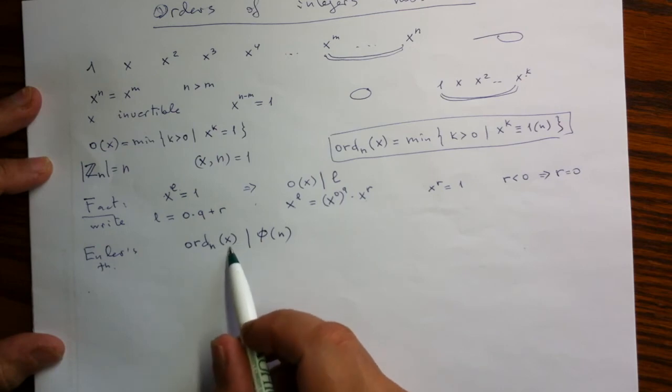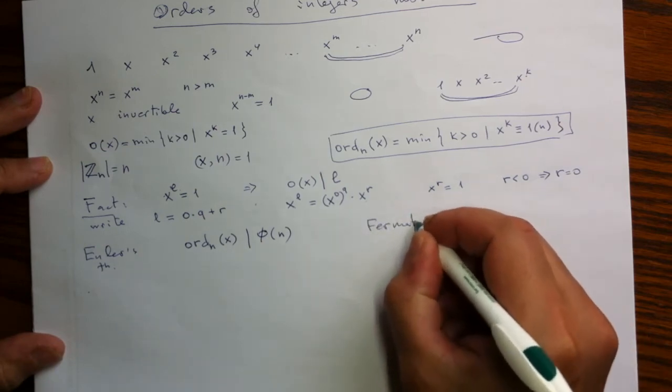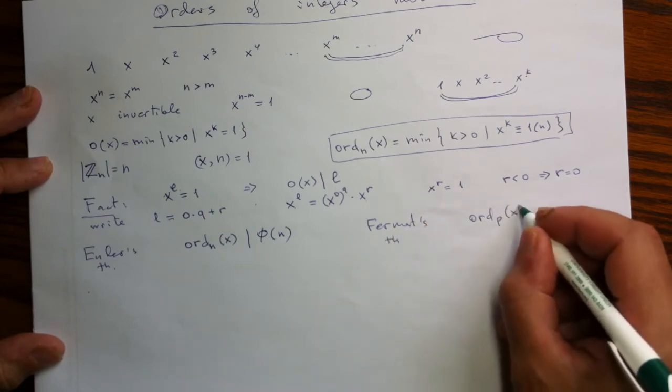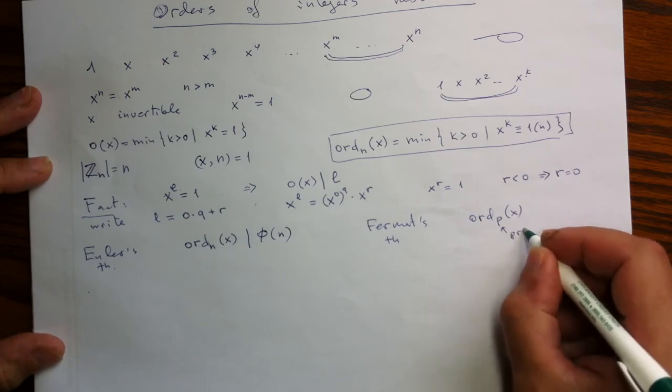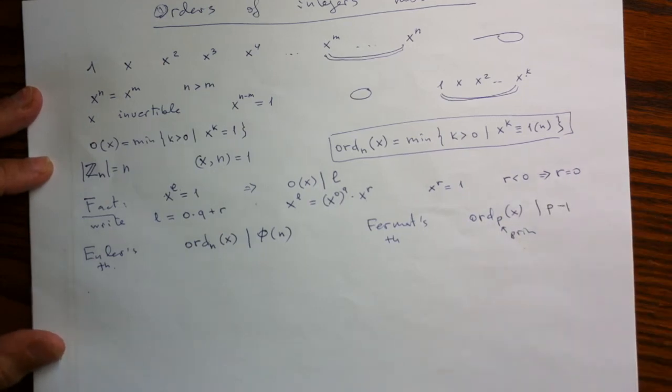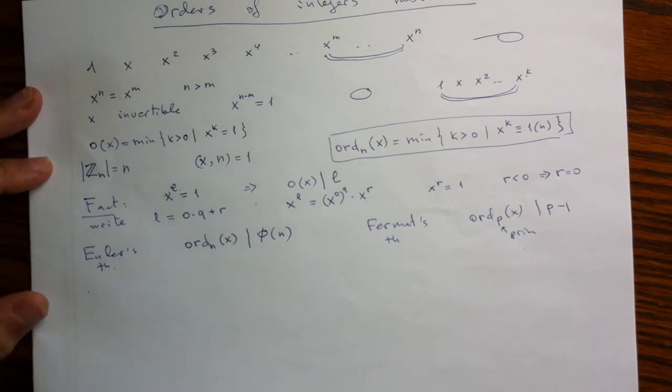The special case would be Fermat saying that the order, multiplicative order modulo prime, always divides the Euler function of the prime, which is p minus 1. In general, the Euler function is computed by breaking n to the product of primes, powers of primes, and then evaluating Euler function on each of such power separately, and then taking the product of values.